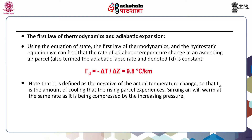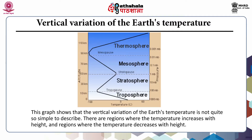Sinking air warms at the same rate as it is being compressed by increasing pressure. This figure shows the vertical variation of the earth's temperature. You can see regions where temperature increases with height and regions where it decreases. The different layers of the atmosphere are the troposphere, stratosphere, mesosphere and thermosphere. In the troposphere, temperature decreases with height. It increases with height in the stratosphere. In the mesosphere, temperature decreases with altitude. In the thermosphere, temperature rises again.